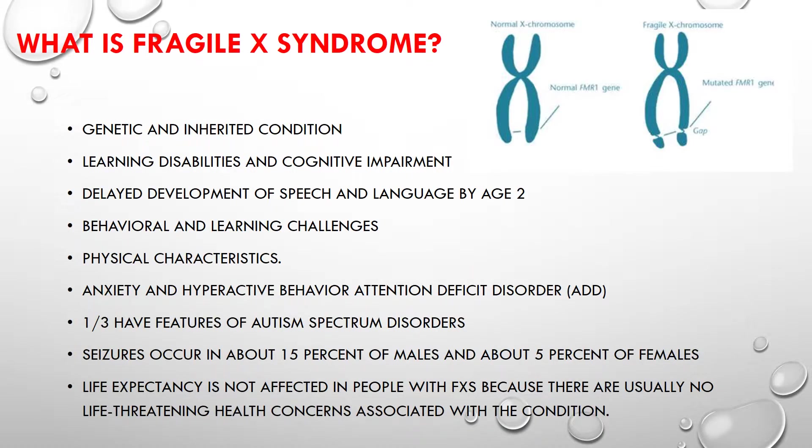What is Fragile X Syndrome? It is a genetic and inherited condition that is also considered the most common inherited form of intellectual disability. Fragile X Syndrome is a single gene disorder caused by the expansion of the trinucleotide CGG, which repeats too often on the Fragile X mental retardation gene, termed the FMR1.